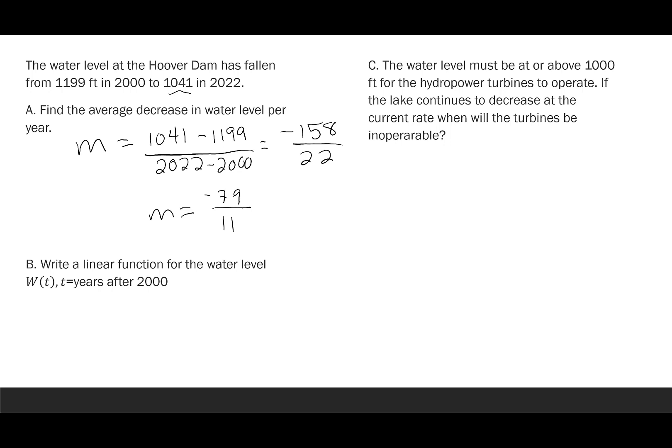Part B says write a linear function for the water level, W(t), t years after 2000. So I'm going to write W(t) is negative 79 over 11 times t plus what did it start at? 1199. So this b represents where was my water level in the year 2000, and then the slope negative 79 over 11 tells me how the water level is changing.